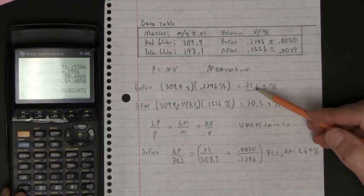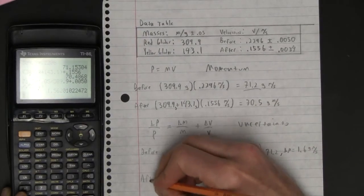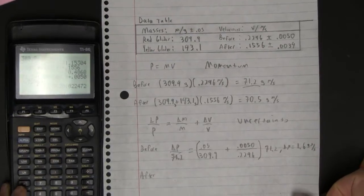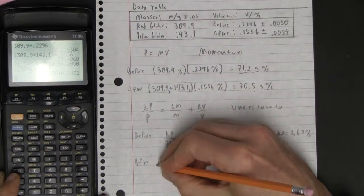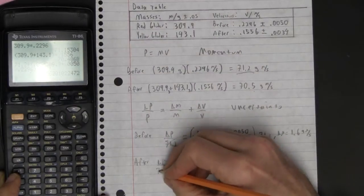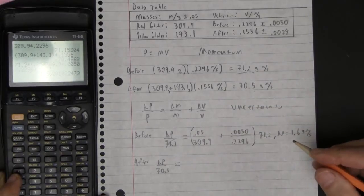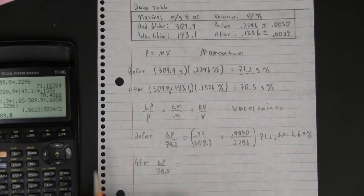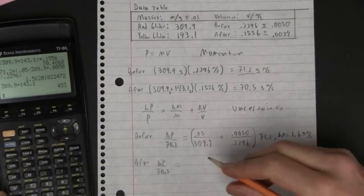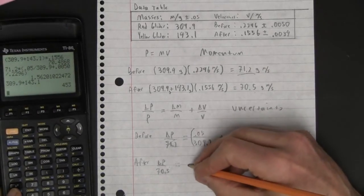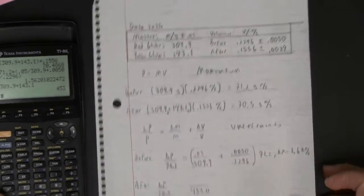And it doesn't even need to do that because this guy has uncertainty too. So let's look at the after. And for after, I'm going to use this guy here. So the uncertainty of momentum is to 70.5 equals, and then what's the mass? I guess we've got to add up the mass. So it's 309.9 plus 143.1. It's 453 even. 453.0.